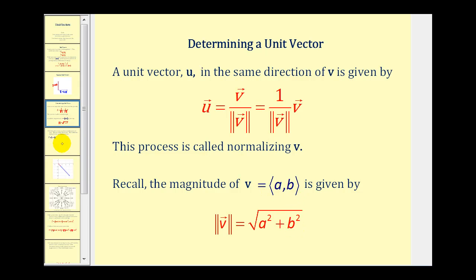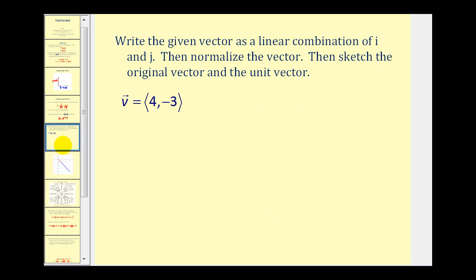Let's look at some examples. Here we want to write the given vector as a linear combination of vector i and vector j, and then normalize the vector — meaning find a unit vector in the same direction. For part one, we rewrite the vector as a linear combination: four times vector i minus three times vector j.